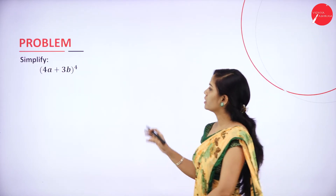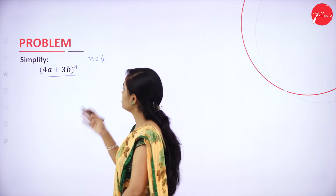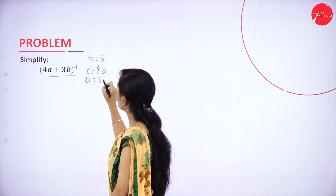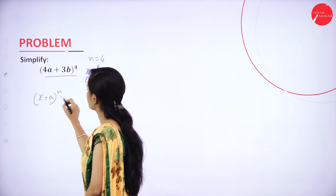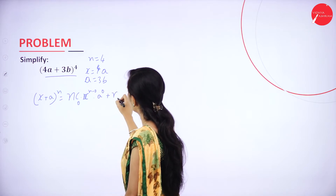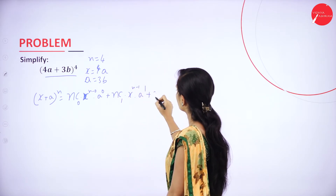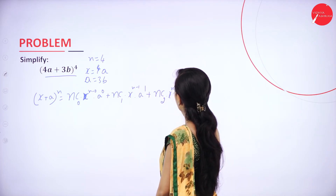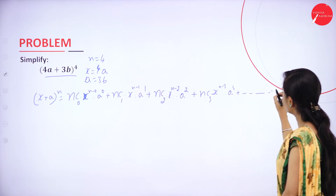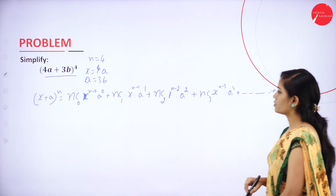Very important question paper problem: 4a plus 3b power 4. Here n value is 4, so you will get n plus 1 = 5 terms. x value is equal to 4a and a value is equal to 3b. Now I will write the formula: x plus a whole power n equals nc0 x power n minus 0 into a power 0, plus nc1 x power n minus 1 a power 1, plus nc2 x power n minus 2 a power 2, plus nc3 x power n minus 3 a power 3.